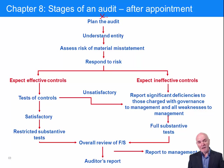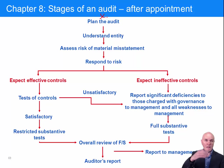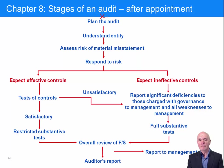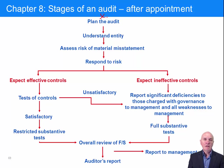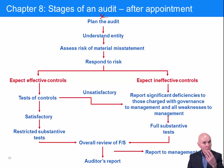Part of planning is understanding the entity — they're put one after the other here, but they'll be done almost in parallel. From that planning, we will be able to identify the risky areas — the areas where there's a relatively high risk of a material misstatement — and we have to plan our audit so that we spot these material errors.